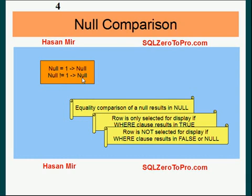The WHERE clause will result in null if this is the only comparison in that WHERE clause. Otherwise, if you're using an OR condition with more than one comparison separated by OR, then the WHERE clause could still result in true. But as a whole, you don't want any comparison to result in null, because that could cause unexpected results.